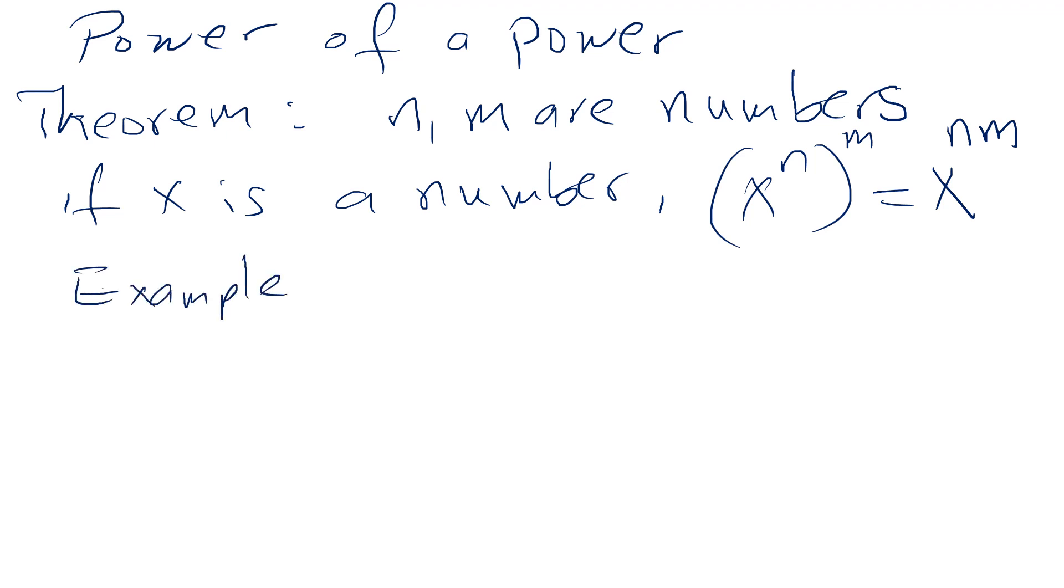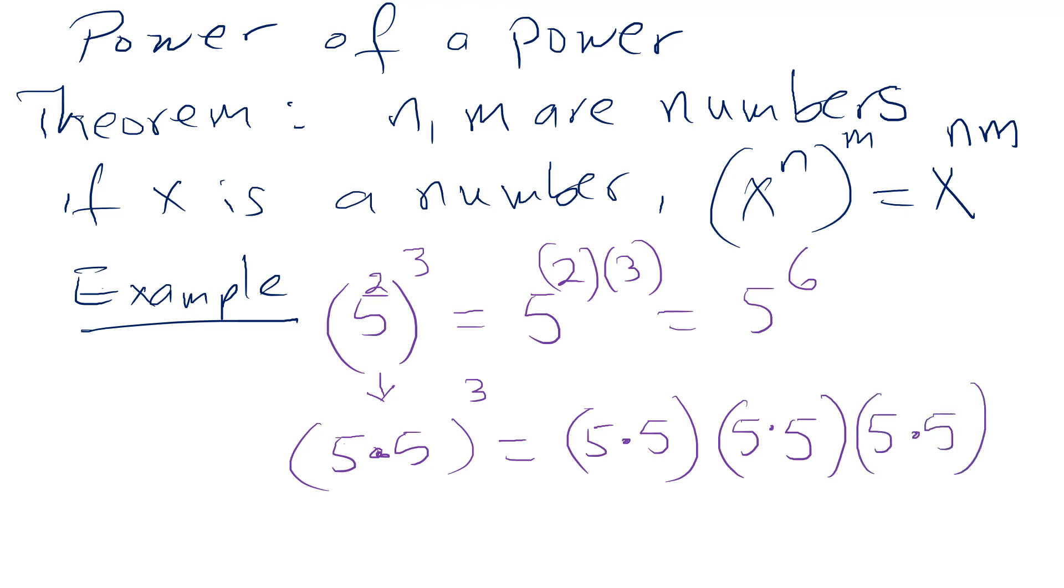An example for it is five squared then cubed. Based on this theorem, it should be 5 to the 2 times 3, which is 5 to the sixth. If you want to understand it more, you can break it down. What is 5 squared? It's 5 times 5, and this is cubed. So 5 times 5 three times gives you 5 times 5 times 5 times 5 times 5 times 5, which is six fives total. So the theory works, and of course we have one base. Here it's not multiplying powers, it's a power to a power.